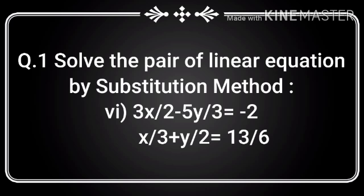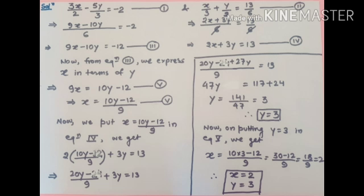Get ready with your NCERT book. Question number 1: solve the pair of linear equations by substitution method. The equations are 3x/2 minus 5y/3 equal to minus 2, and x/3 plus y/2 equal to 13/6. Let us solve this question.